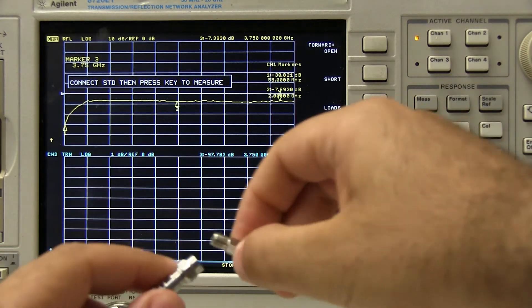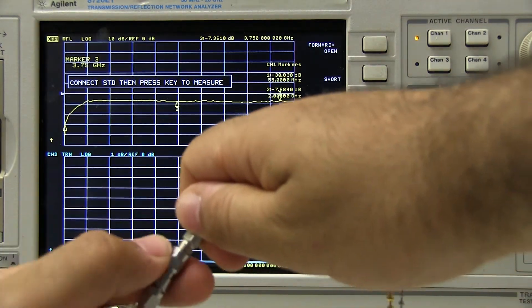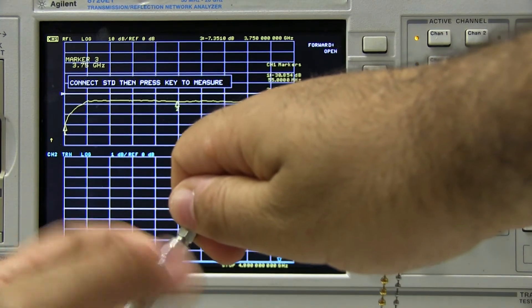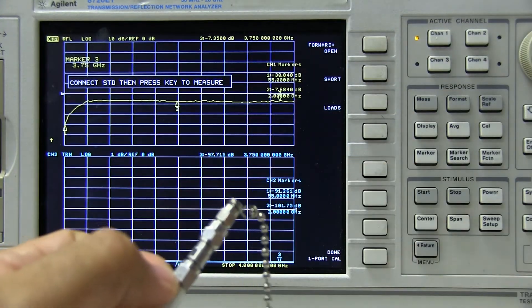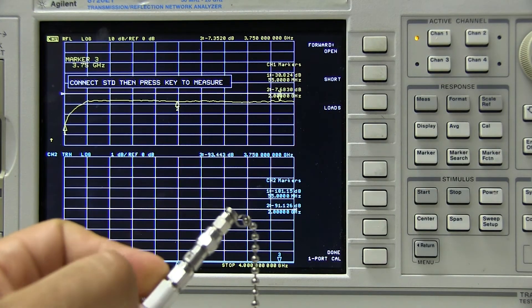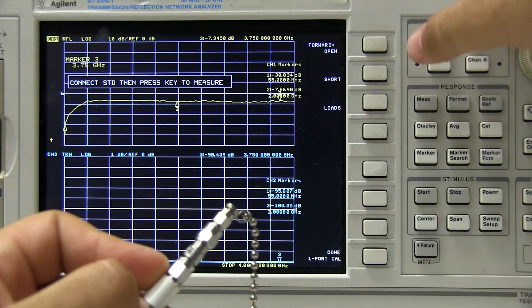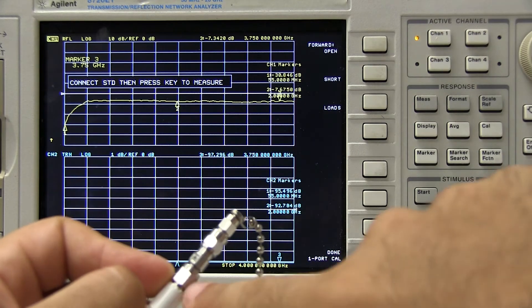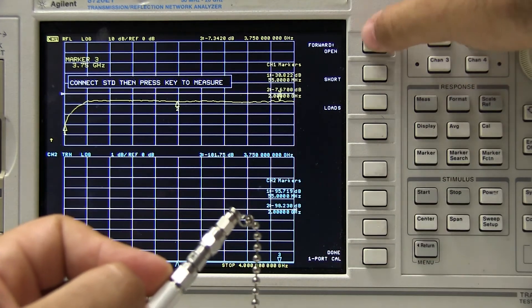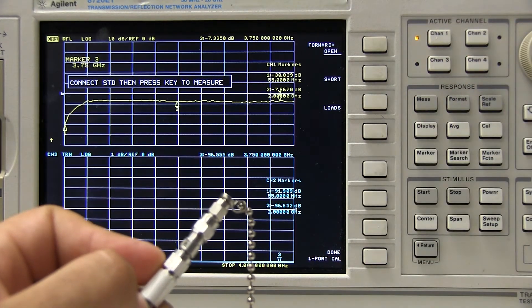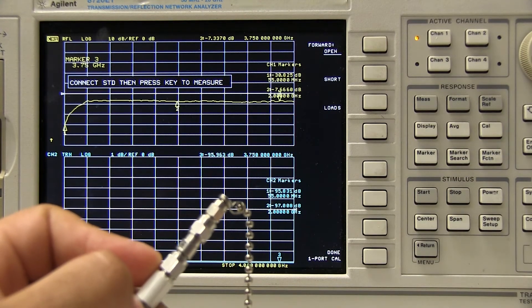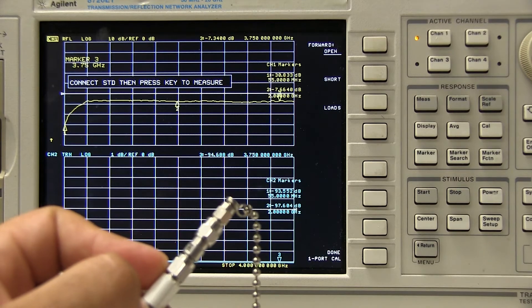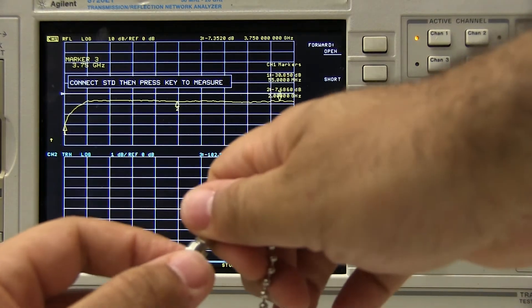Another useful tip, when you're screwing on an SMA, always screw the male end on. I'll explain that at the end of the video, why that is so important and can get you out of trouble in the lab. So, we've hooked up our open. I'm going to press the open button. Now it has taken a bunch of reference measurements, and now it knows what an open looks like on this port.